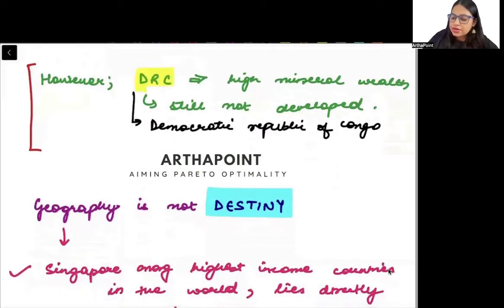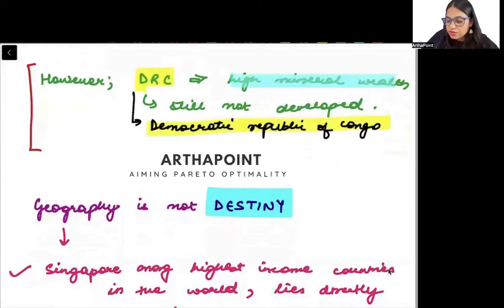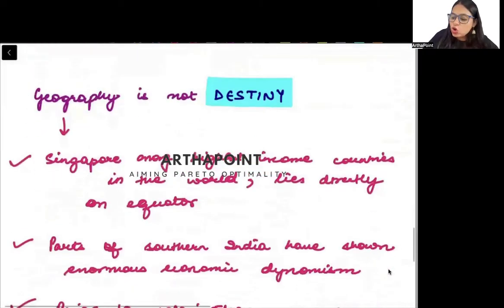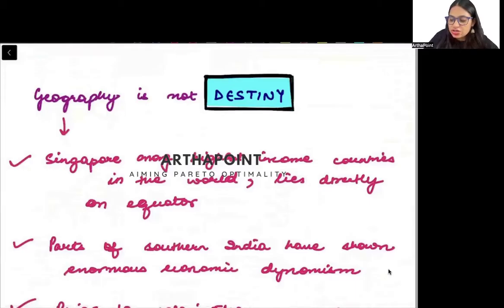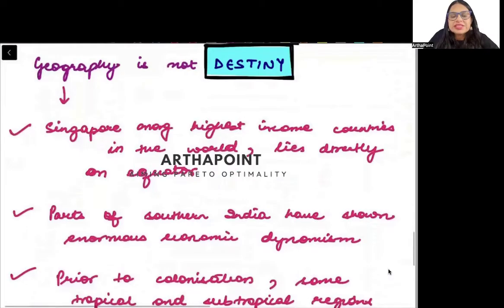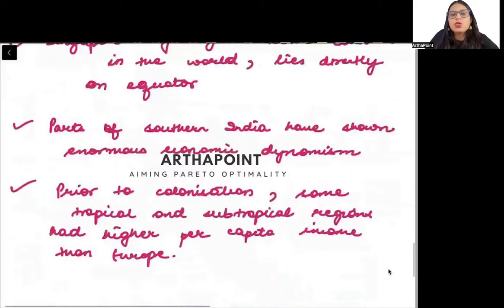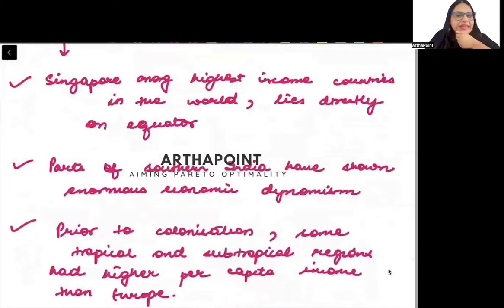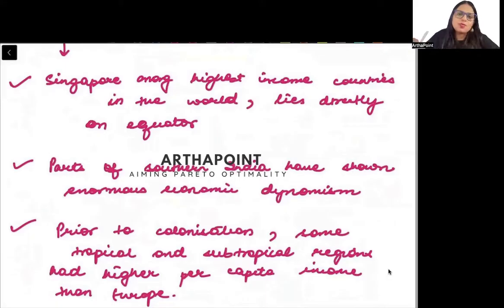Take the example of the Democratic Republic of Congo — they have high mineral wealth, but they are not developed. So geography is not destiny. Even if you have good geography, good resources, and everything — if you do not aim for development and give your 100%, you cannot develop.